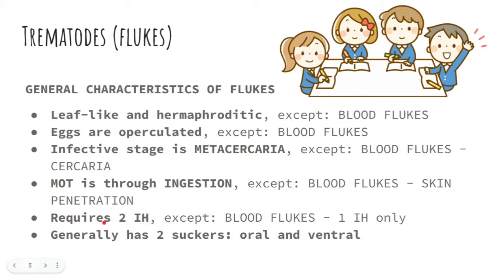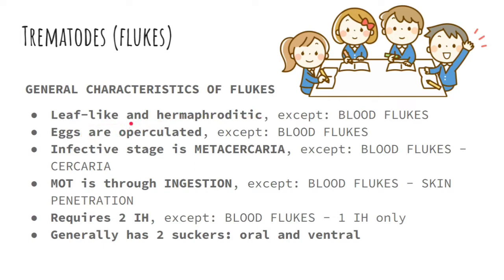This relates to their life cycle. Generally, our Trematodes or Flukes have two suckers — oral and ventral. To summarize the general characteristics: leaf-like and hermaphroditic; eggs are operculated; infective stage is metacercaria; mode of transmission is through ingestion; and all require two intermediate hosts. All of these apply except to the blood flukes. Memorization is easier here because almost all Trematodes share the same general characteristics — the only exception is the schistosomes.